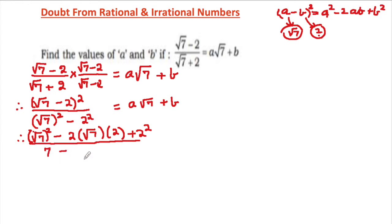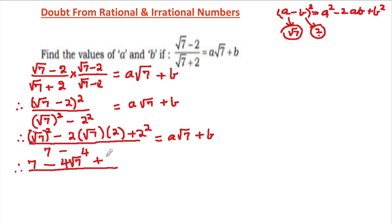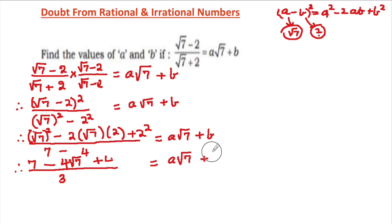√7 times √7 is 7, minus 2 squared which is 4, and that equals a√7 plus b. In the next step, √7 whole squared is 7, minus 2 times 2 which is 4, giving 4√7, plus 4. This gives us 7 minus 4 equals 3, and that equals a√7 plus 3, equaling a√7 plus b.